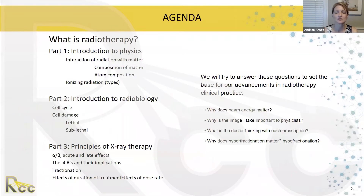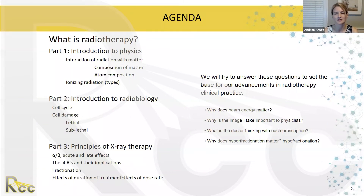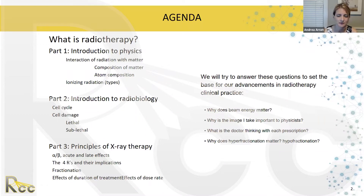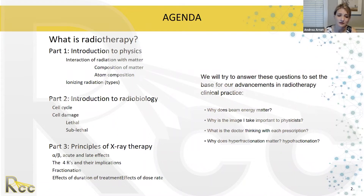For our agenda today, we're first going to talk about what exactly radiotherapy is, then move into an introduction to physics where we'll discuss important interactions of radiation with water and matter, the composition of different types of matter, the structure of the atom, and the different ionizing radiation types. We'll also discuss an introduction to radiobiology, which looks at the cell cycle and ways that radiation damages cells and leads to cell death.